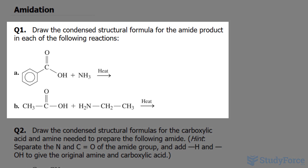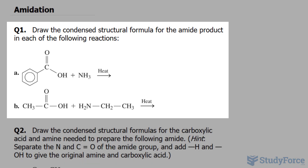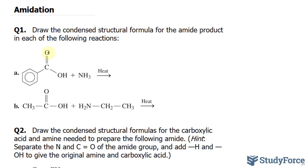That being said, the question reads: draw the condensed structural formula for the amide product in each of the following reactions. As you can see, there's already a carboxyl group right here where I'm hovering over. And we know that this NH3 will form a bond with carbon. Therefore the product in this reaction should be the following — you have your benzene ring.